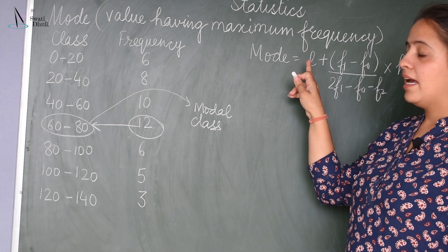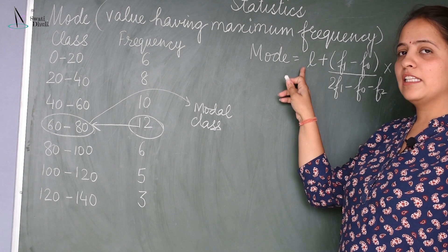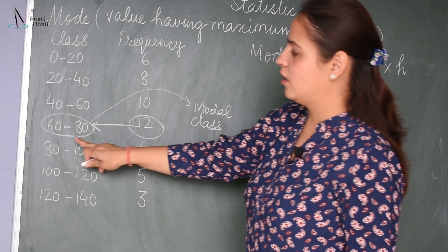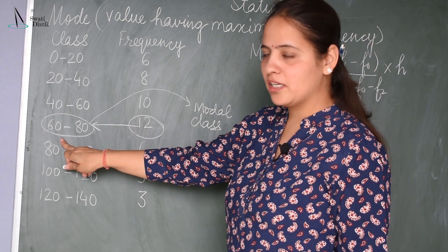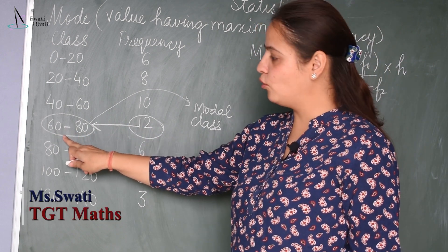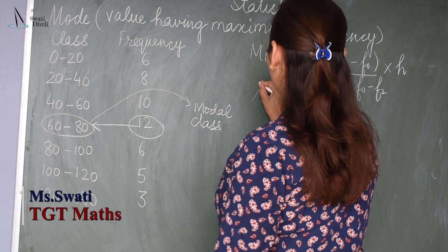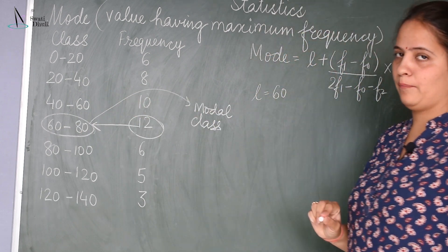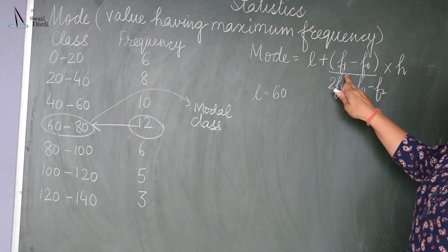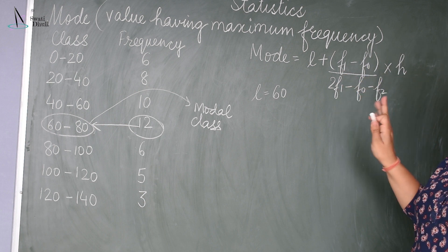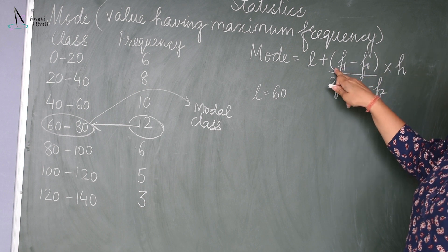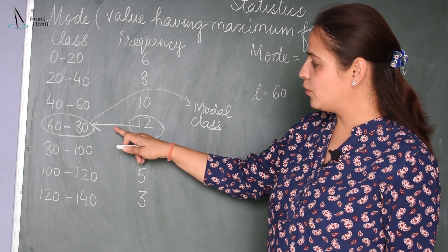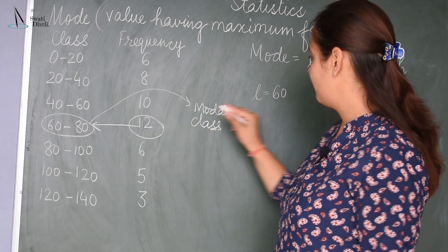First, L is the lower limit of the modal class. We have already found that the modal class is 60 to 80, so the lower limit L is 60. Next, F1 is the frequency of the modal class. The frequency of the modal class is 12, so F1 = 12.